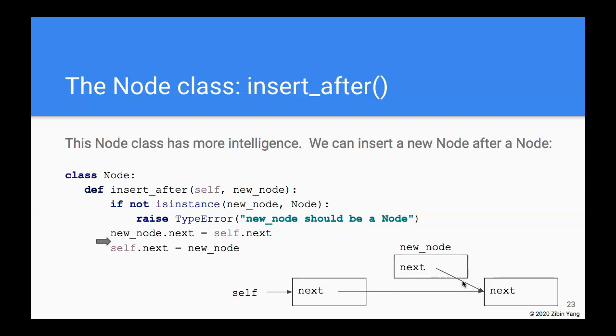So new node.next now is pointing to the same node as self.next, and we execute the next line. And that is we point the self.next to the new node—so that's how new node is inserted after self.